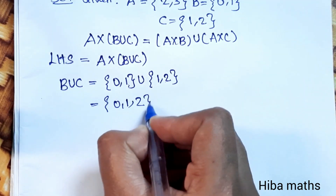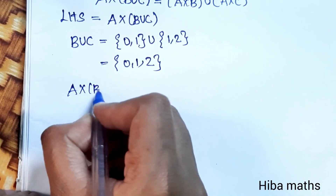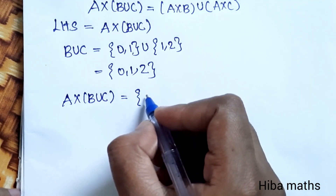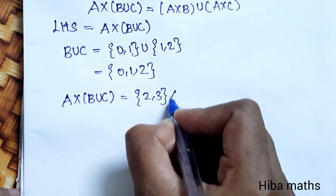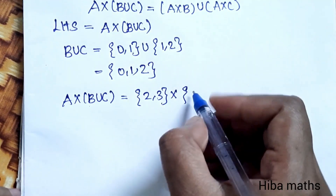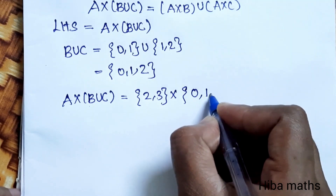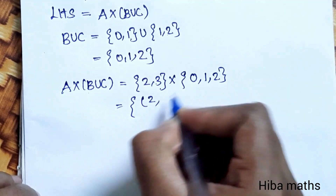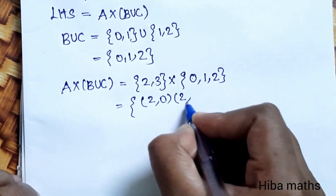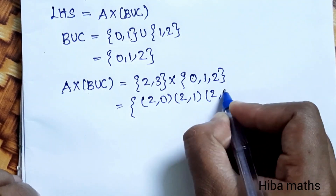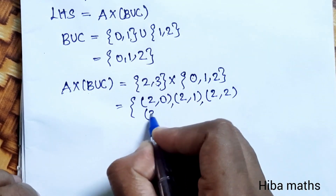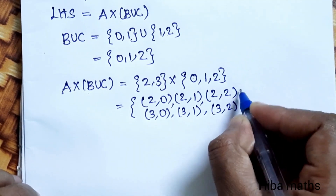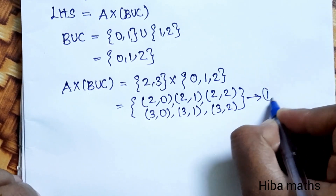B union C equals {0, 1, 2}. Now we compute A cross (B union C), where A equals {2, 3} cross {0, 1, 2}. This gives the result for LHS.